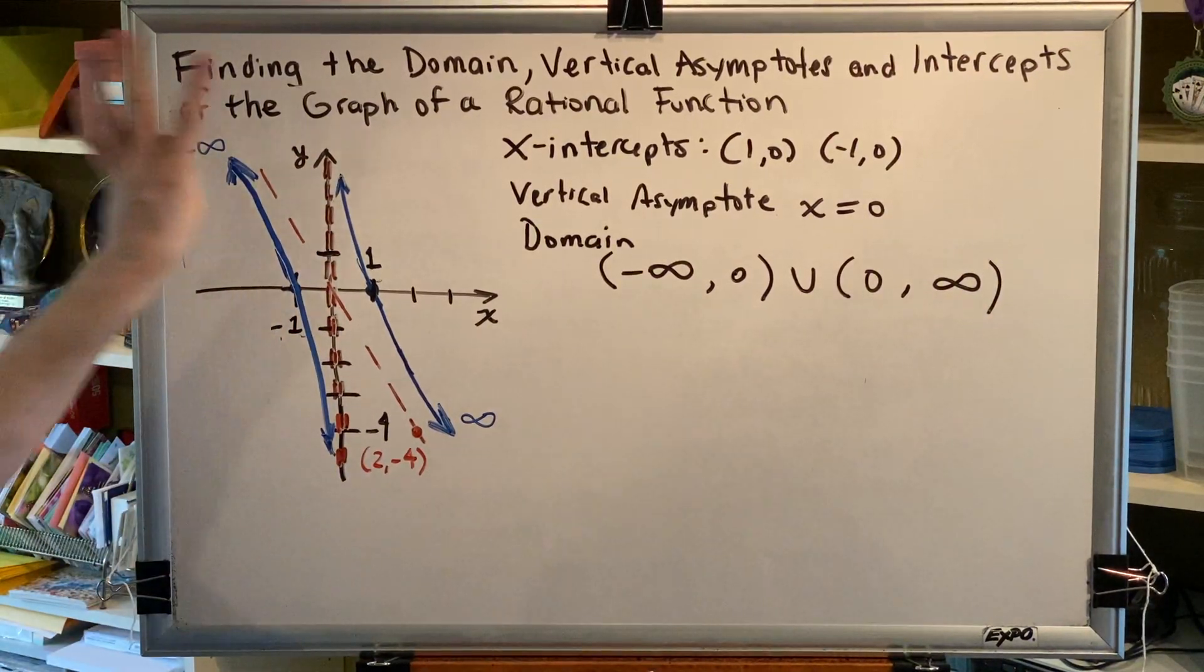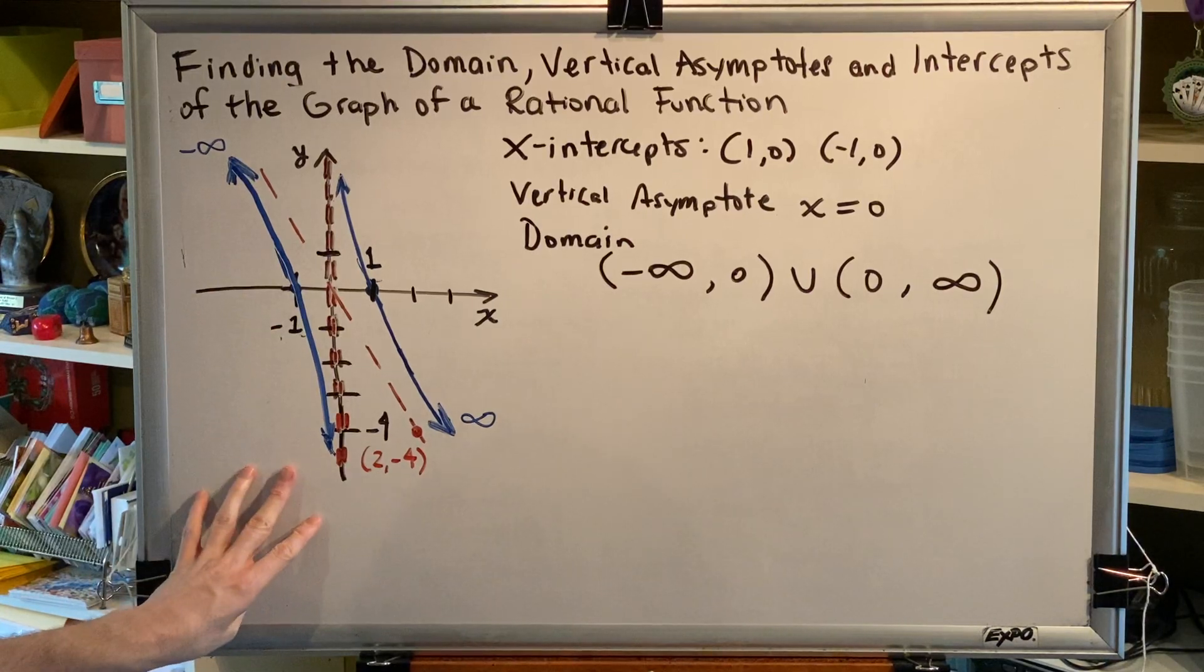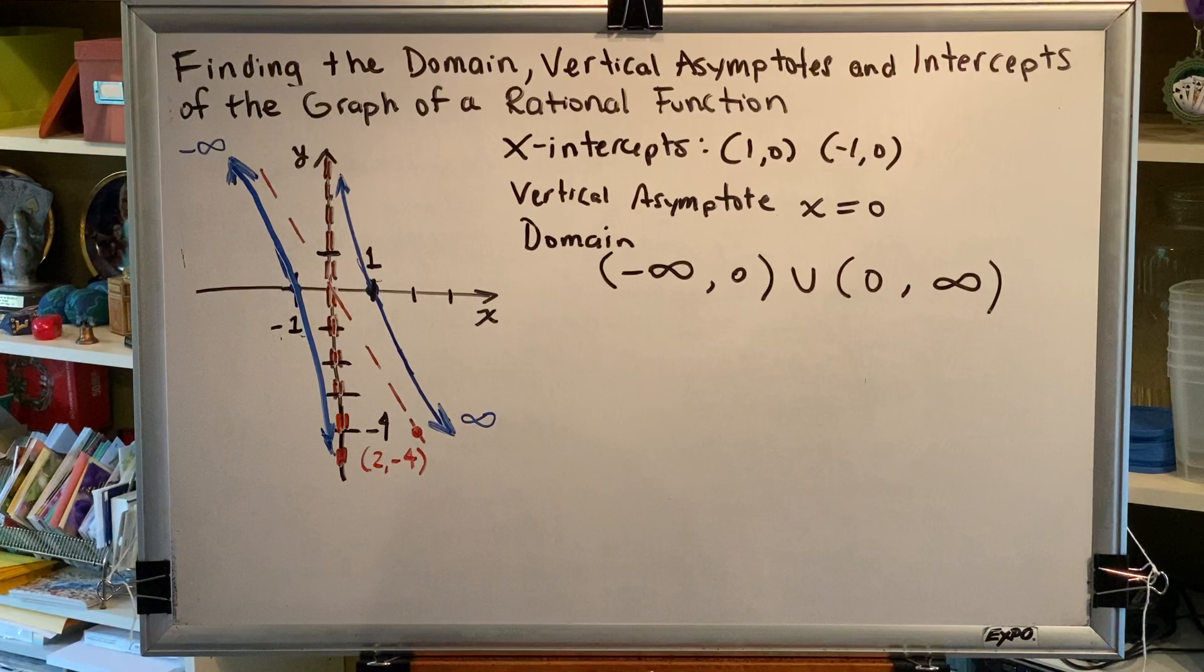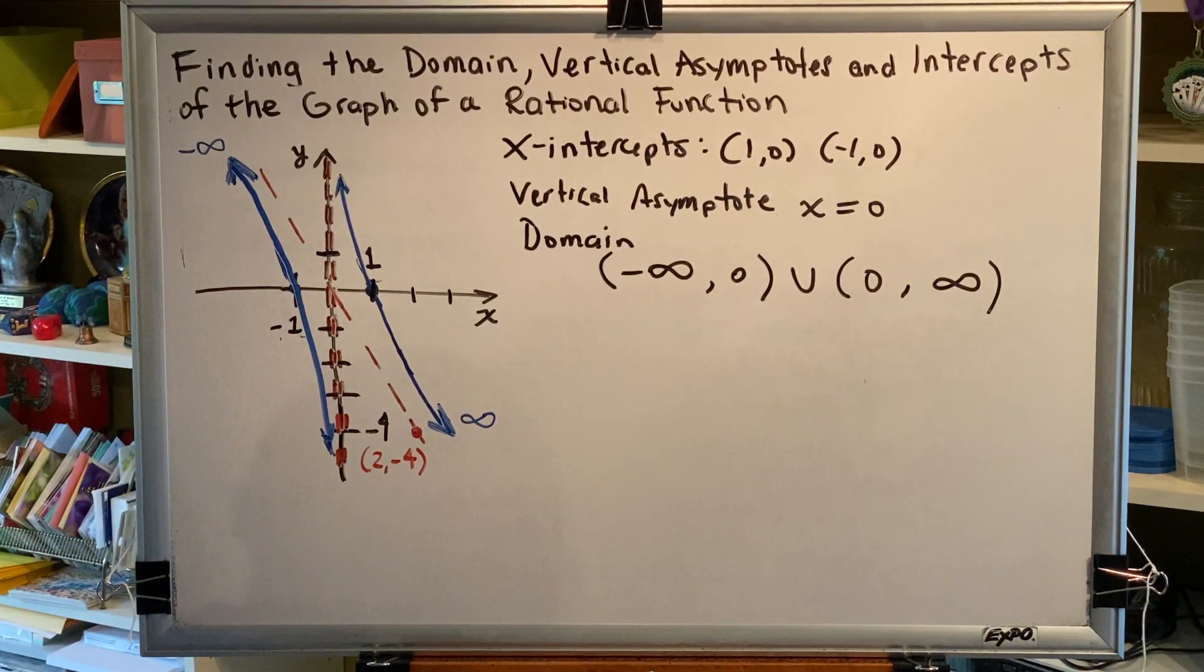This means that every value of x, every real number value of x is represented by this graph, except for zero, because that is where our vertical asymptote is. Okay, so we have found the domain, vertical asymptotes, and intercepts of the graph of this rational function.